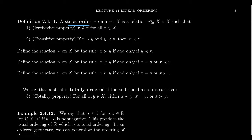We say that a strict order, or strict ordering, is a relation on a set X with itself. By definition, a relation is a subset of X cross X. A strict order satisfies two axioms. The first one is the irreflexive property — we never have that an element X is related to itself. This is like the antithesis of the reflexive property that we see with equivalence relations.